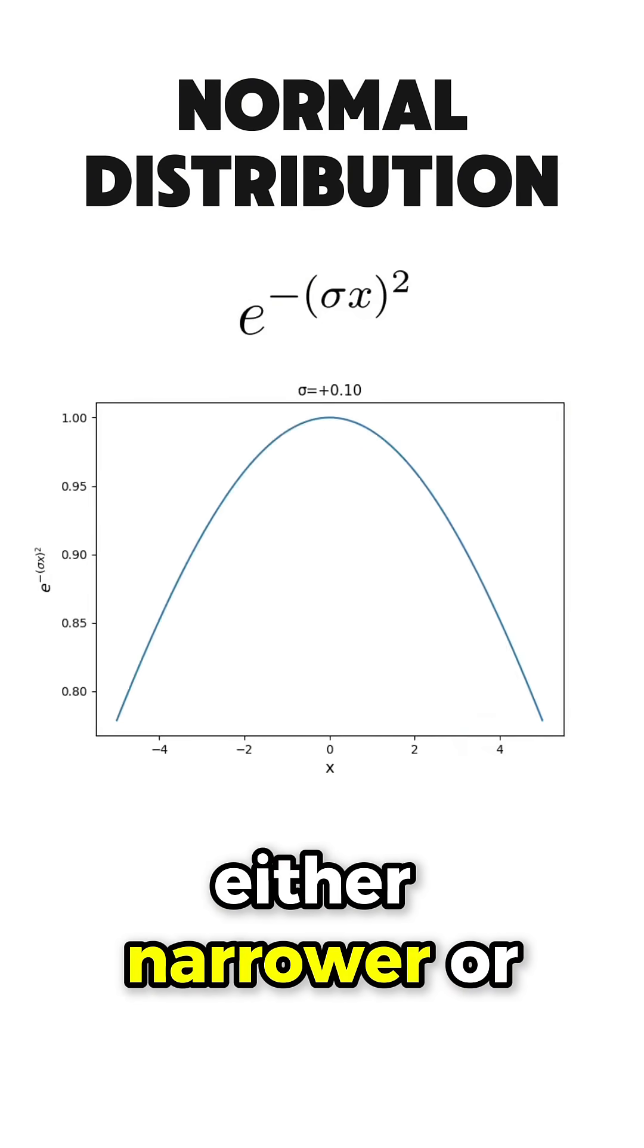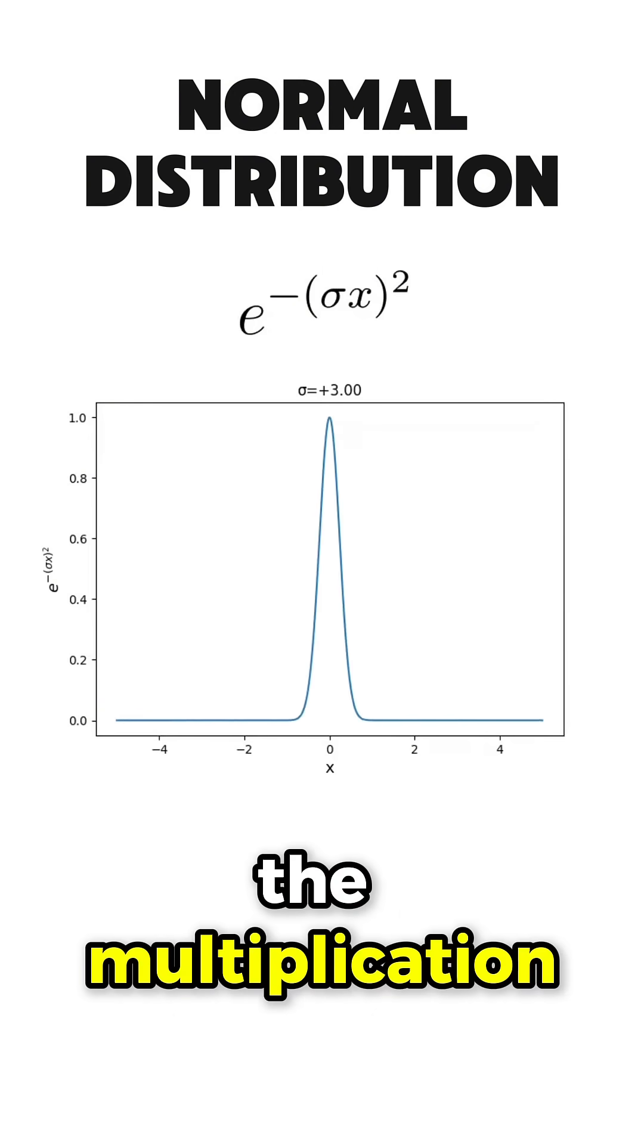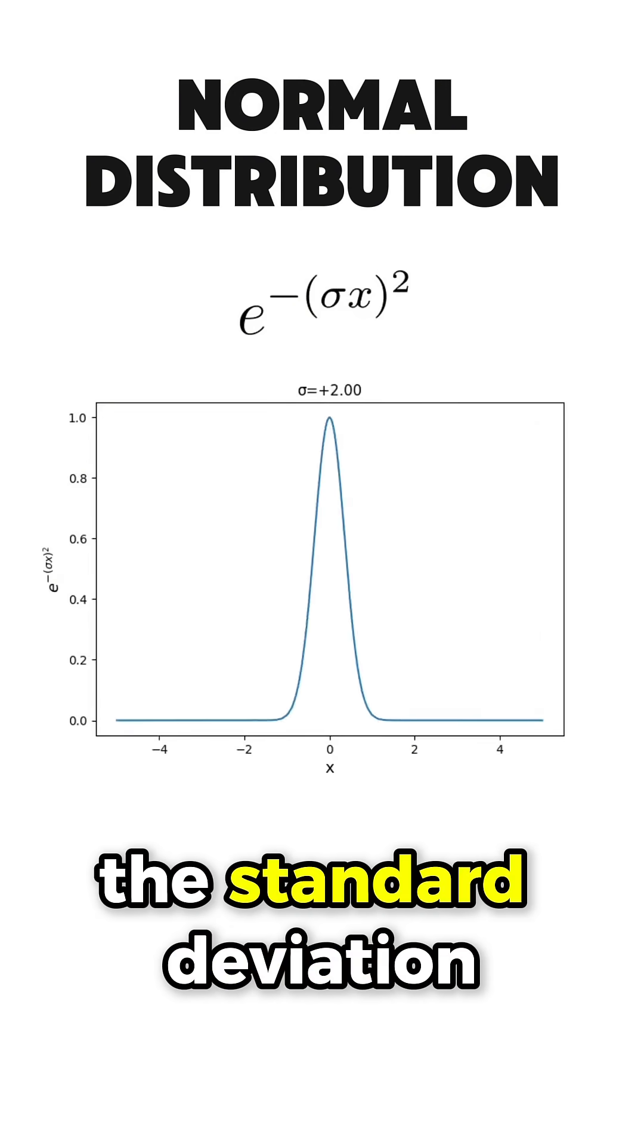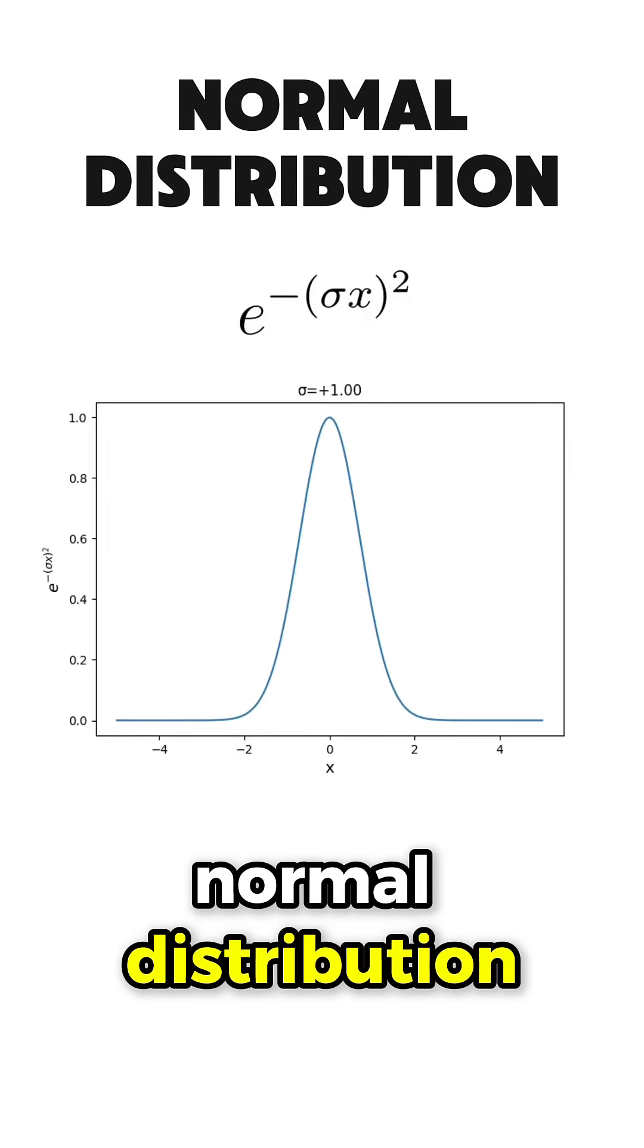We can see that it gets either narrower or wider as we increase the multiplication constant sigma, or the standard deviation as it is known in the normal distribution.